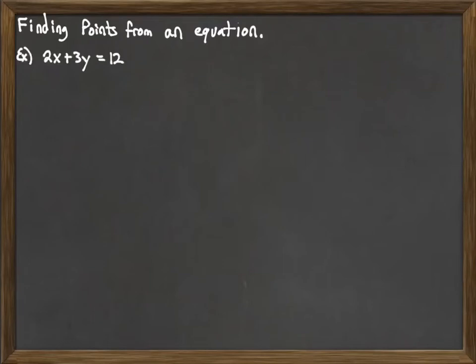So consider the equation here 2x plus 3y equals 12. Now, in the past, we've solved linear equations that had only one variable. And when we did that, we got a single answer for just x. But now, our equation has two variables. And that means there's going to be a lot more possible solutions.